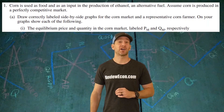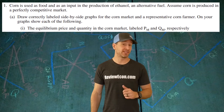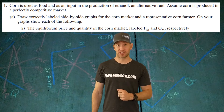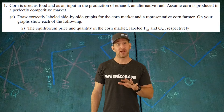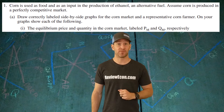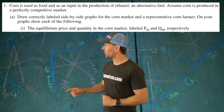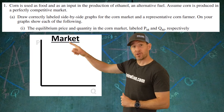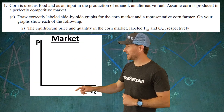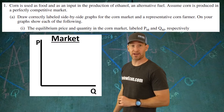This question is all about the market for corn. Corn can be used as either food or as an input into the production of ethanol. We have to draw side-by-side graphs for the market and the firm. Here we're going to start off with the market. Label your y-axis as price or P, your x-axis as Q or quantity.